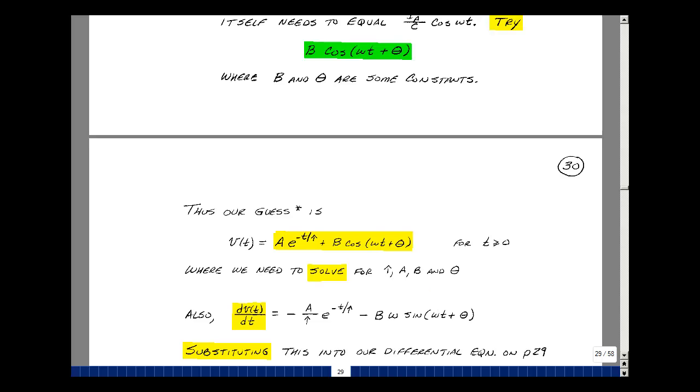Now our differential equation has a derivative in it, so let's differentiate this expression. The derivative of A, E to the minus T over tau is A times 1 over tau, E to the minus T over tau. The derivative of cosine is minus sine. We'll make it T plus theta. And we take the derivative of what's inside here, which would just be, with respect to T, would just be omega. We have a constant B.